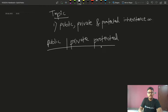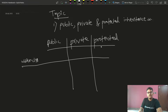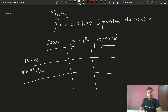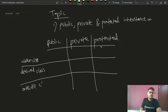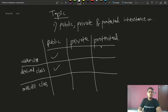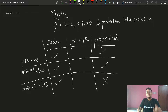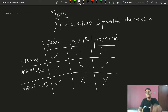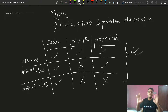This is within the class. For derived class and outside the class — public can be used within the class, in derived classes, and outside the class. Protected can be used within the class and in derived classes, but not outside the class. Private can only be used within the class — not in derived classes and not outside the class. This table is very important. If you remember the public, private, and protected scope, then you know where each can be used.